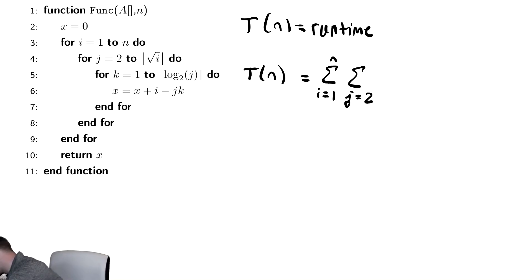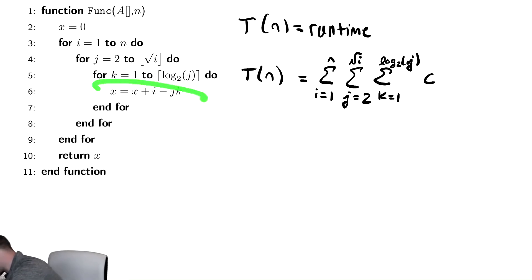Be careful. Two to radical i. Notice again that we ignored the floor function just as we've done in the past because they are tedious. This goes from k equals one to log base two of j. And inside again takes constant time. It is basic arithmetic and retrieval and assignment.